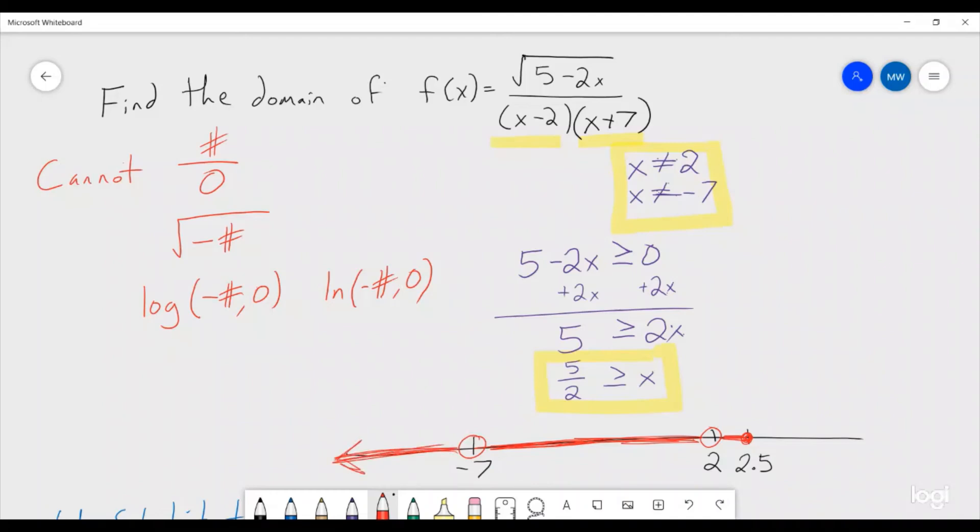And how do we write that? Well each piece of this can be written separately. This one is from negative infinity to negative 7. This piece is from negative 7 to 2, and this piece is from 2 to 5 halves, and since we include 5 halves it'll be a square bracket. Then we're just going to piece all those together with union symbols, and that's going to be our answer.